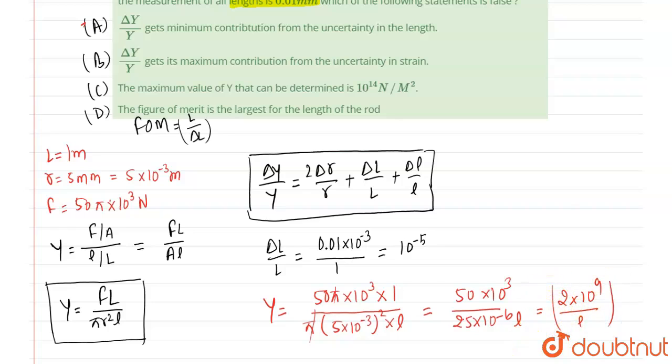Here the change in length is not given in the equation, so we cannot get the value of Y. So option C will be wrong because maximum value of Y can be determined as 10¹⁴ - without value of ΔL we cannot say that. So the false statement will be option C.